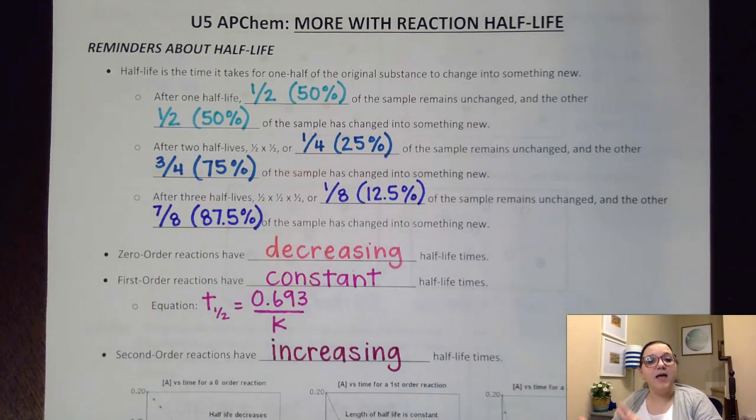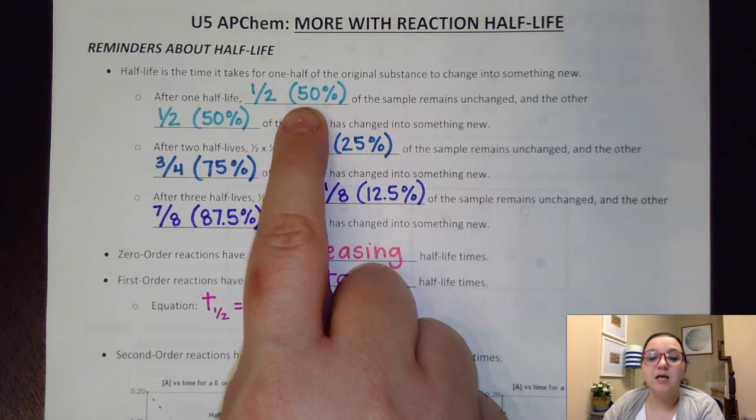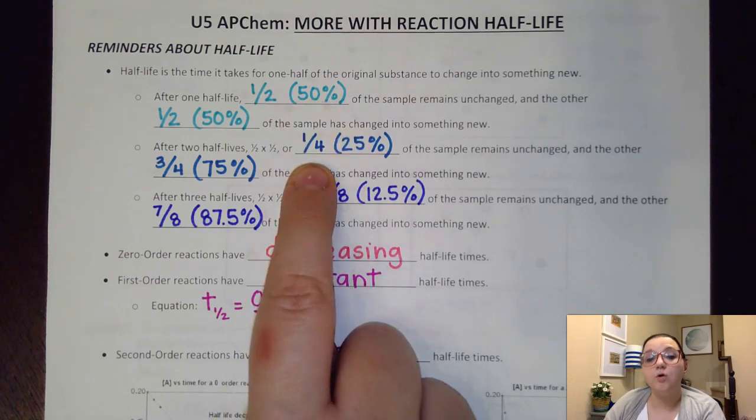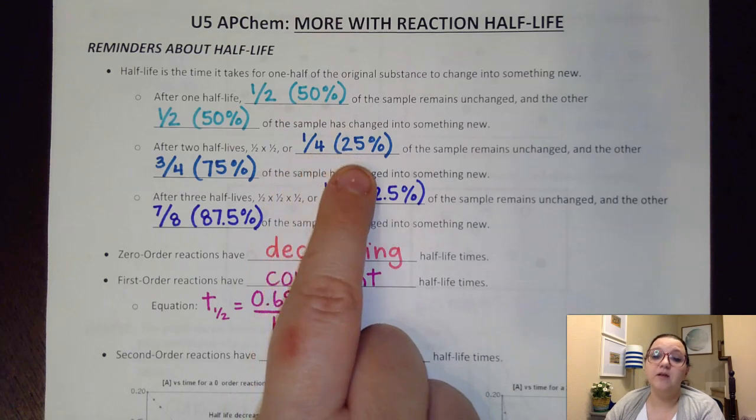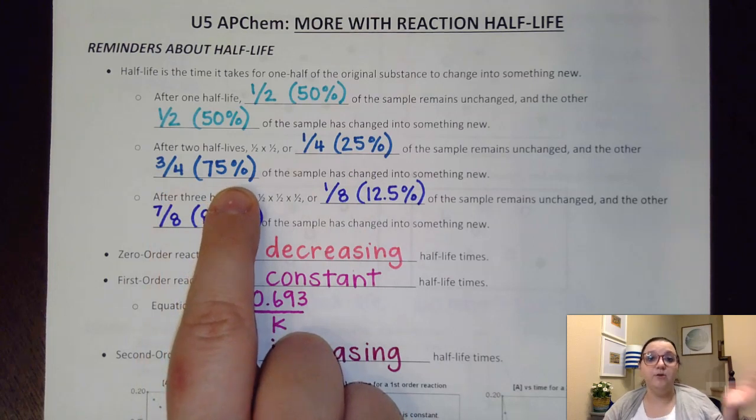Now let's say a second half-life time passes. So now what happens is that original unchanged substance, that original reactant, I'm going to cut this in half again. And so when I cut it in half again, I end up with only a quarter or 25% of it that remains unchanged. The other three quarters or 75% has changed into something new.